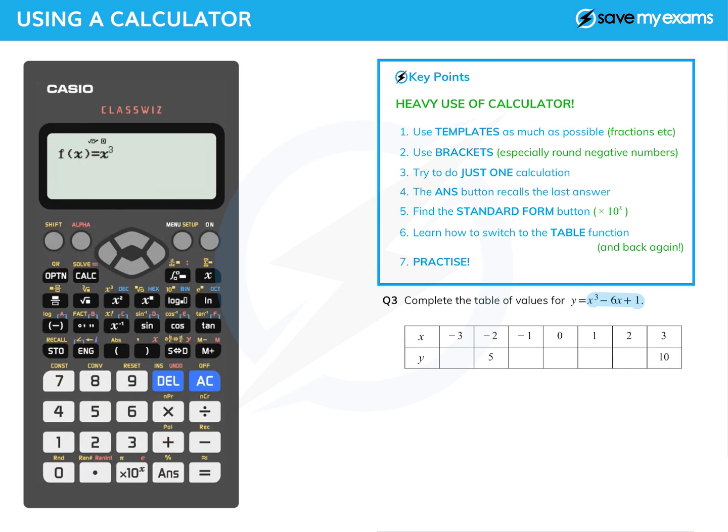You just use the template: shift x cubed gives me the x cubed, minus six, then alpha close bracket gives me the x, plus one. I press equals. It asks me for a table range. The range goes from minus three to three. The step is one, so I put one in there and press equals. Then having done that, I press equals and it gives me a table.